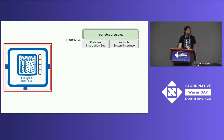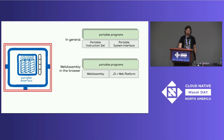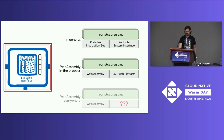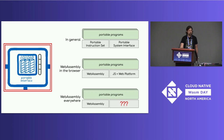In general, if we want to have portable programs, we need a portable instruction set and a portable system interface. In the browser, WebAssembly is designed to be that portable instruction set, and JavaScript and the web platform are a natural, portable system interface. But if we want to run WebAssembly everywhere, what takes that role when we don't necessarily have JavaScript or the web platform?